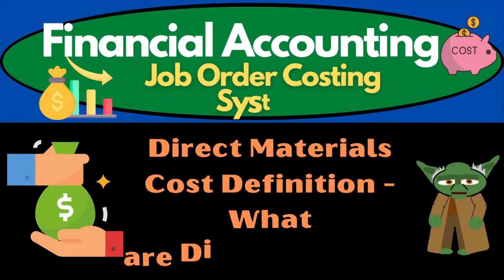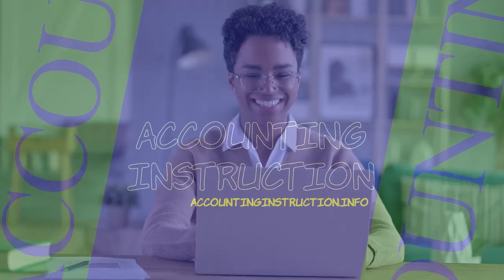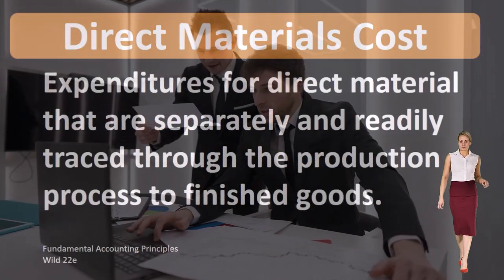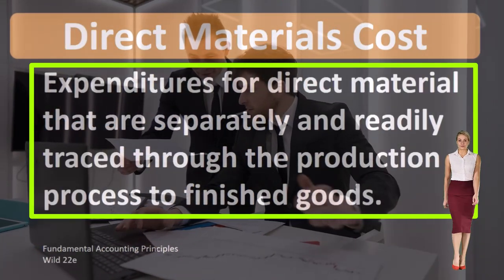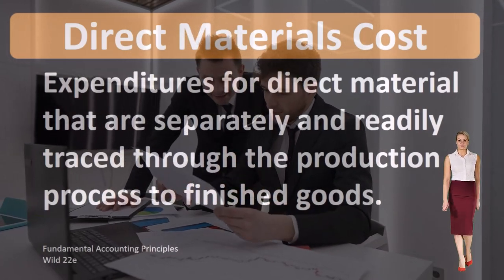Hello, in this lecture we will define direct materials costs. According to Fundamental Accounting Principles, Wild 22nd edition, the definition of direct materials cost is expenditures for direct material that are separately and readily traced through the production process to finished goods.